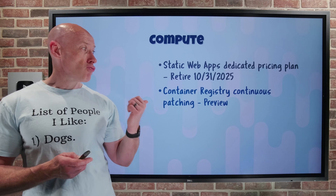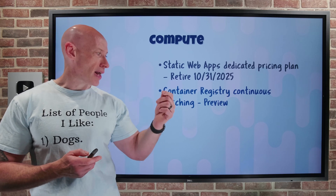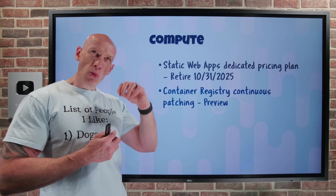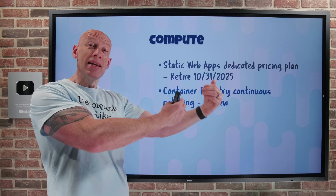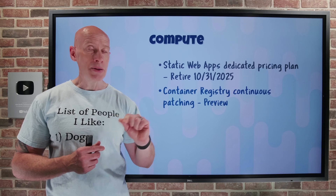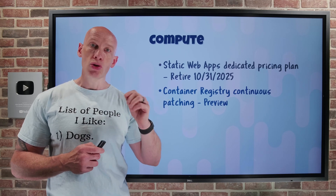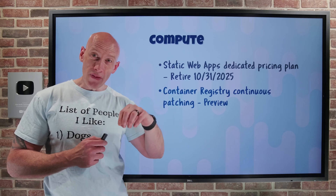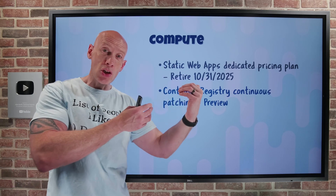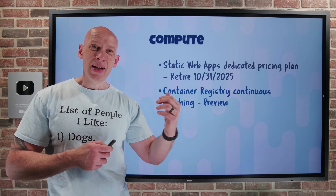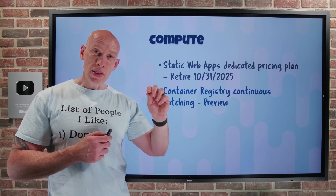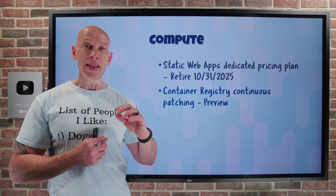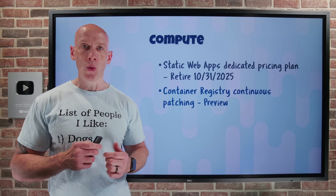Azure Container Registry now has continuous patching in preview. This feature supports the automatic detection and remediation of OS-level vulnerabilities in the container images you store in Azure Container Registry. It does regular scans using Trivy, and then applies security fixes using Copa. You pay based on the compute resources consumed for the patching activity. Currently, there is no Windows-based image container support — it's all Linux.